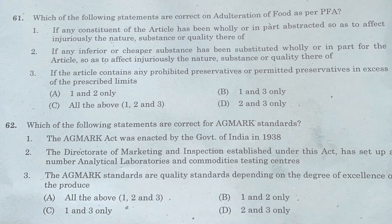Question 61: Which of the following statements are correct on adulteration of food as per PFA? Statement 1: if any constituent of the article has been wholly or in part abstracted so as to affect injuriously the nature, substance, or quality thereof. Statement 2: if any inferior or cheaper substance has been substituted wholly or in part for the article so as to affect injuriously the nature, substance, or quality thereof. Statement 3: if the article contains any prohibited preservatives or permitted preservatives in excess of the prescribed limits. Option A: 1 and 2 only. Option B: 1 and 3 only. Option C: all of the above. Option D: 2 and 3 only. Answer is Option C, all of the above.